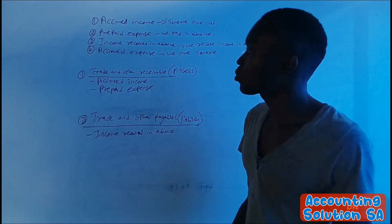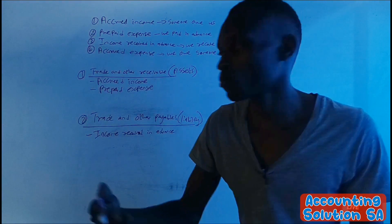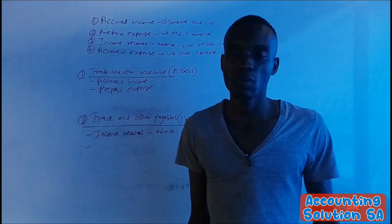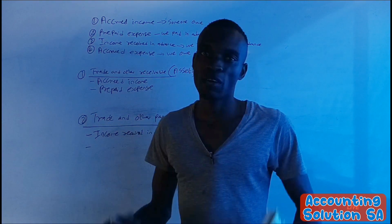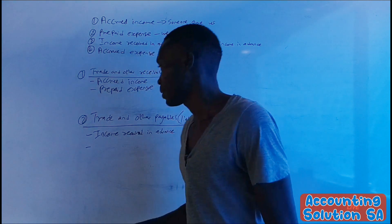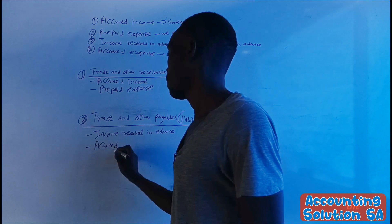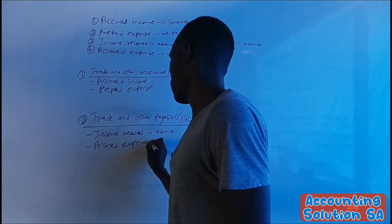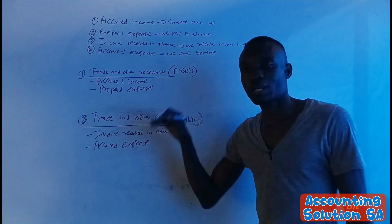Accrued expense is clear — we owe someone. For example, if it's December and we haven't paid rent for December but we've already stayed, we owe that rent. That makes it a liability. Accrued expense is classified as a liability.